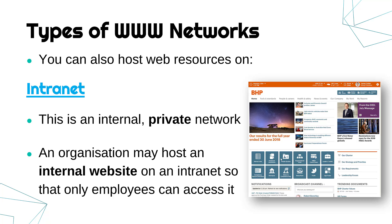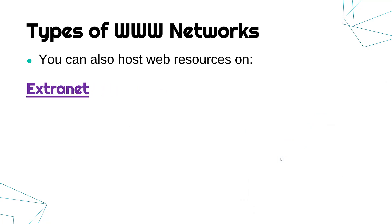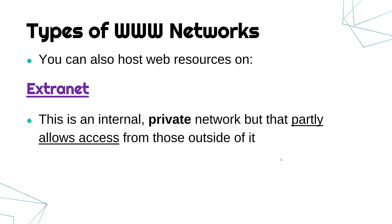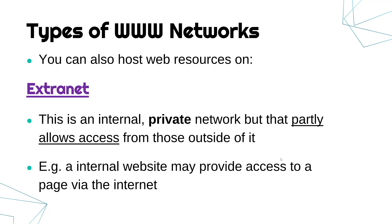Occasionally you might want a bit of both — most of it private, but some of it a bit more open. That's where another network type comes in: an extranet. Extranets are less common. They are also internal and private networks, but the difference is they are partly open — they partly allow access from those outside of the organisation. The internal website might have a page that allows access to something via the internet, where you log in and gain access to part of the internal network.